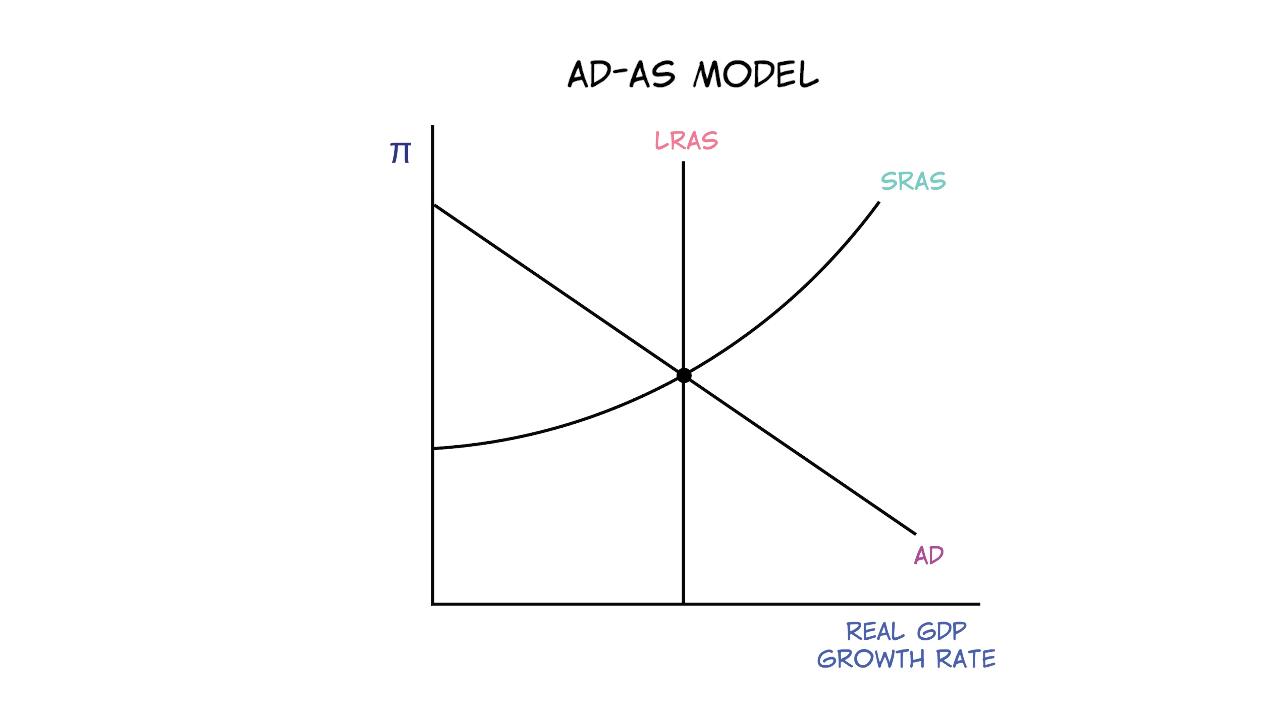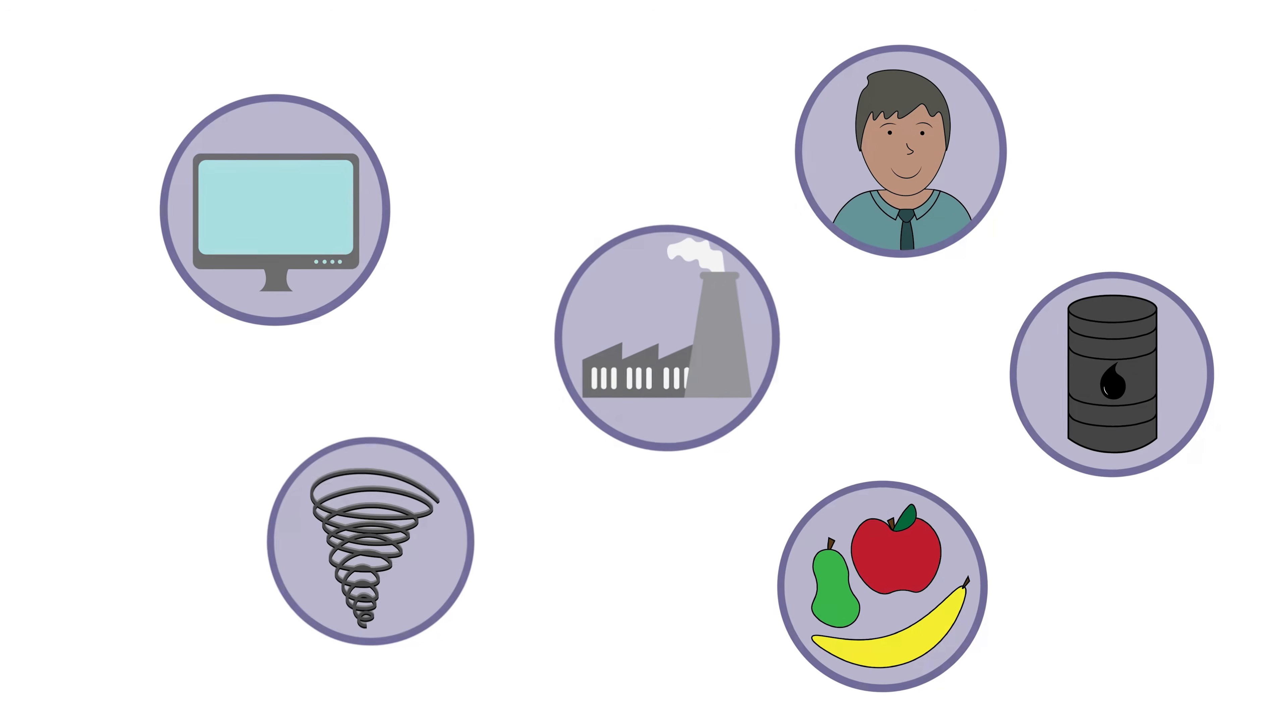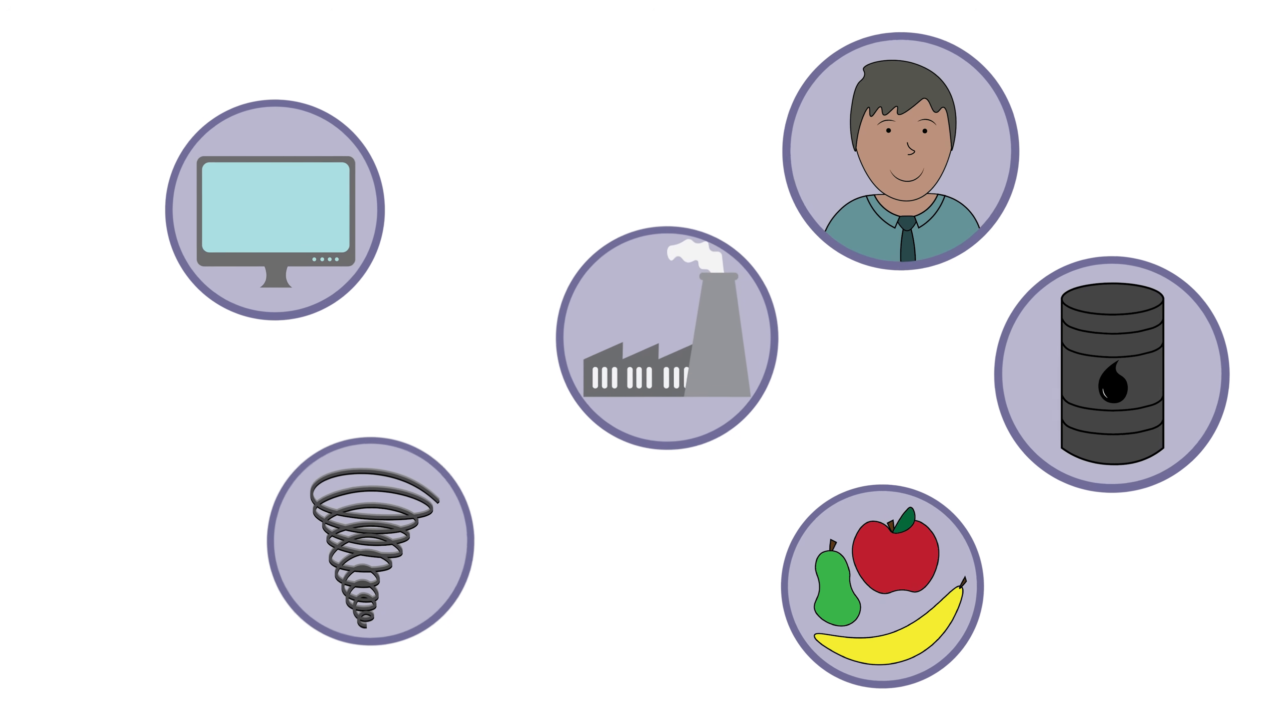What these exercises show us is that we don't always know the short-run results of inflation and GDP from multiple shocks to the economy until we know which shock was larger.